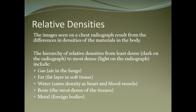In X-rays, the image patterns are due to relative densities of materials in the body. Gas, which is less dense and seen in the air or trachea, appears more black. Bone, which is denser and compact, appears white. Metal is the most white, water is also somewhat white, and fat is grayish-black on the chest X-ray.